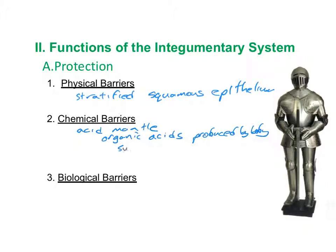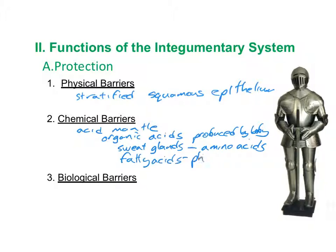These organic acids form an inhospitable environment for bacteria. They come from sweat glands in the form of amino acids, and then fatty acids found in phospholipids, both of which lower the pH. The third protection barrier is a biological barrier created by the immune system, with the key cells being the epidermal dendritic cells.